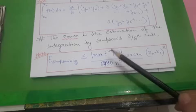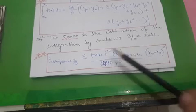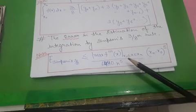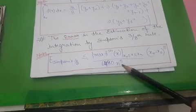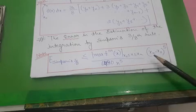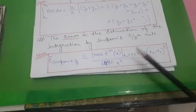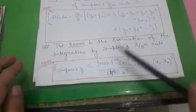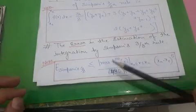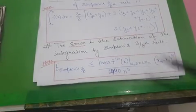The maximum value of the fourth derivative is obtained by choosing the x value that gives the maximum result between x0 and xn, including the endpoints x0 and xn themselves. Remember both these formulas — the integration formula and the error formula — for solving any question using Simpson's 3/8 rule.